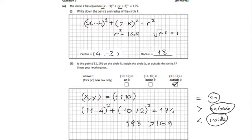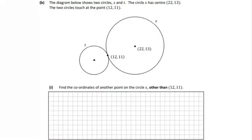So straightforward question there, all based on the formula on page 19 of the log tables. On to the next question. We have two circles. Find the coordinates of another point on circle S. Let's see what we have at the start.